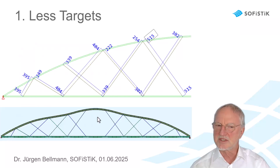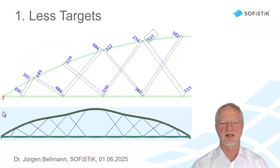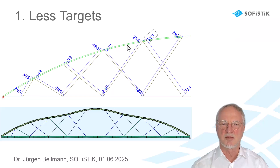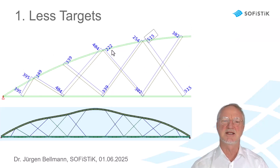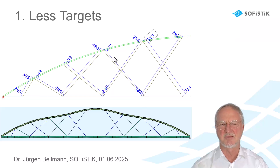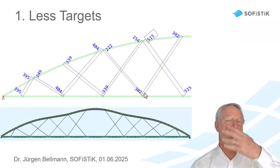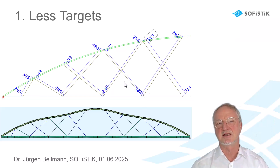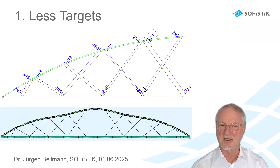When I do so I get this result. The target is reached and the normal forces look not so bad. But I see here I have 222 in this cable and 302 in this cable, and I would like to get the same force in both cables.